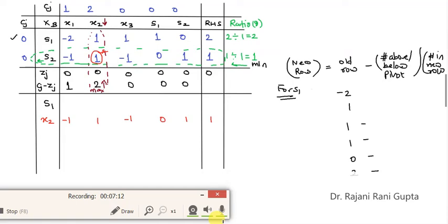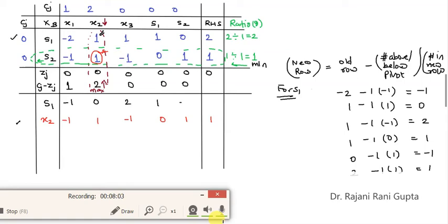Okay. Let me write it in the correct position so that you will not get confused. So this is for S1. Old row means row in the first table. It is minus 2, 1, 1, 1, 0, 2 minus number above or below the pivot. So what is the number? The number is 1 multiplied by the number in new row which is for this one in the new table for x2. That is minus 1, 1, minus 1, 0, 1 and 1. So when you calculate it, you will get here minus 1, here 0, here you will get 2, here you will get 1, here minus 1 and here you will get 2 minus 1 as 1.